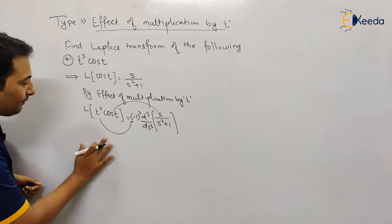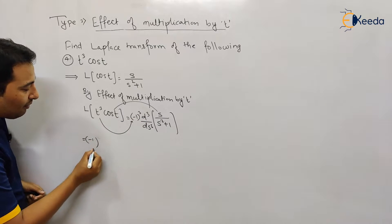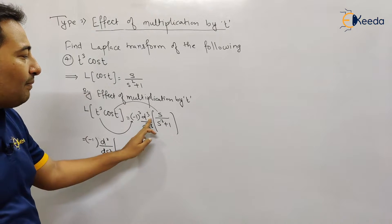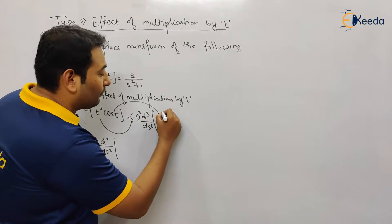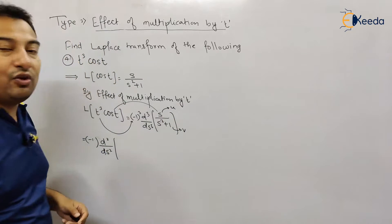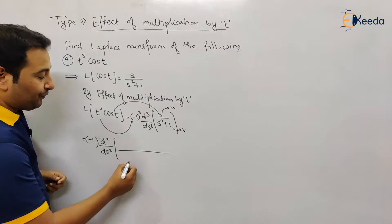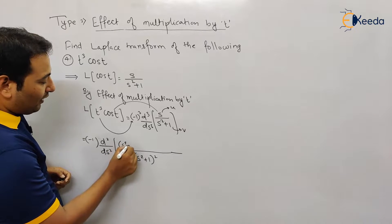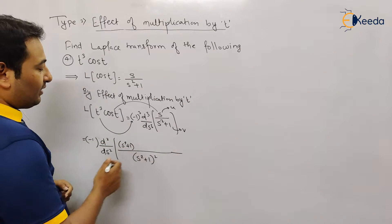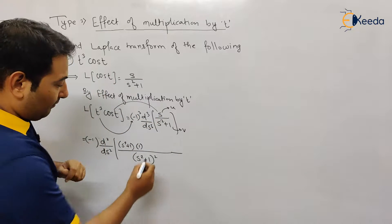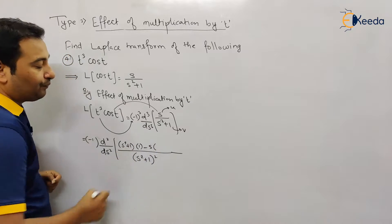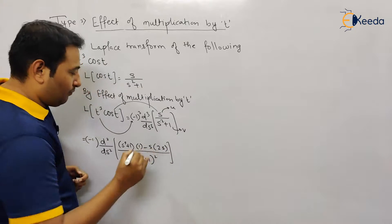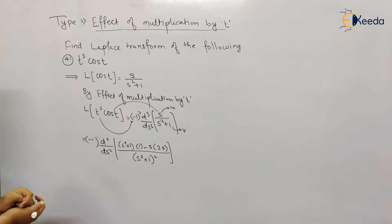Minus one cubed is minus one, so minus one comes outside. I'm applying one differentiation out of three, leaving two outside. This is a u/v rule problem — this is my u and this is my v. The rule gives: denominator squared (s²+1)² in the denominator; v as-is times derivative of u, minus u as-is times derivative of v, which is 2s.